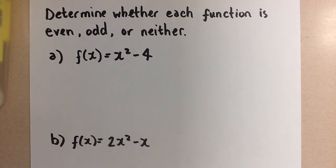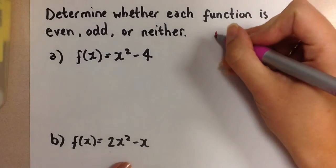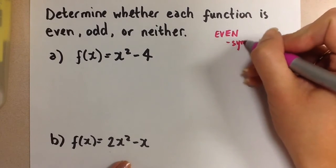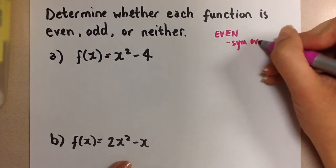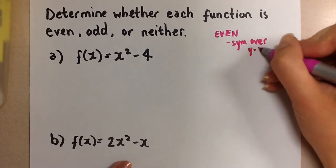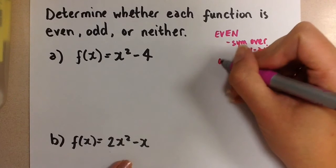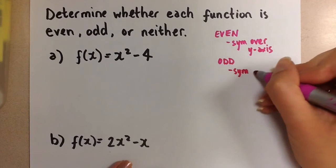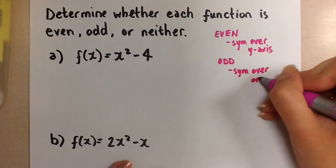We're going to determine this for three functions using the algebraic method. We could do it graphically as well. Remember that for a function to be even, it is symmetrical over the y-axis. And for a function to be odd, it is symmetrical over the origin.